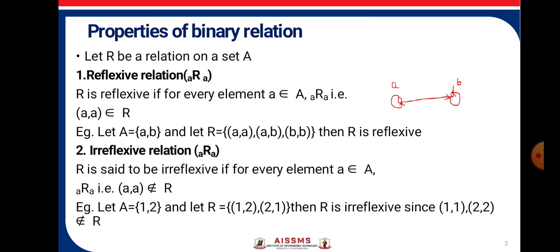The second property is Irreflexive Relation. R is said to be irreflexive if, for every element a belonging to set A, a is not related to a. Consider the example where set A has elements {1, 2} and the relation R is {(1,2), (2,1)}. Then R is irreflexive since (1,1) and (2,2) do not belong to the relation.